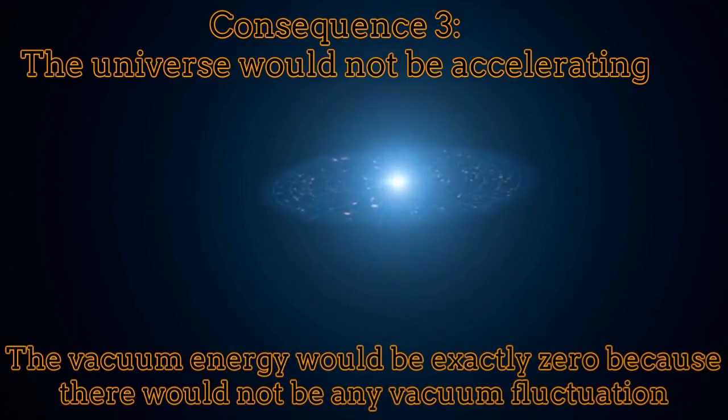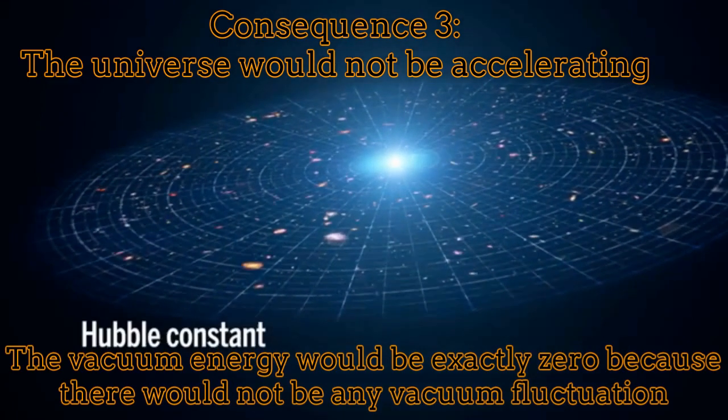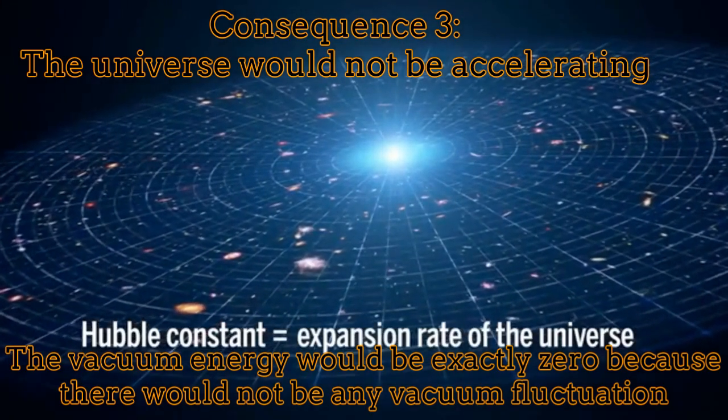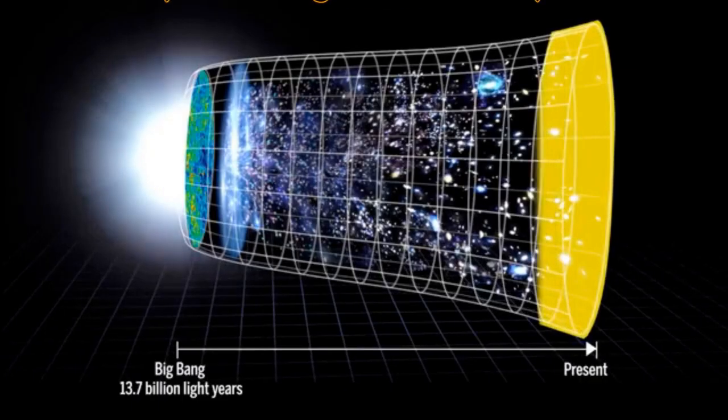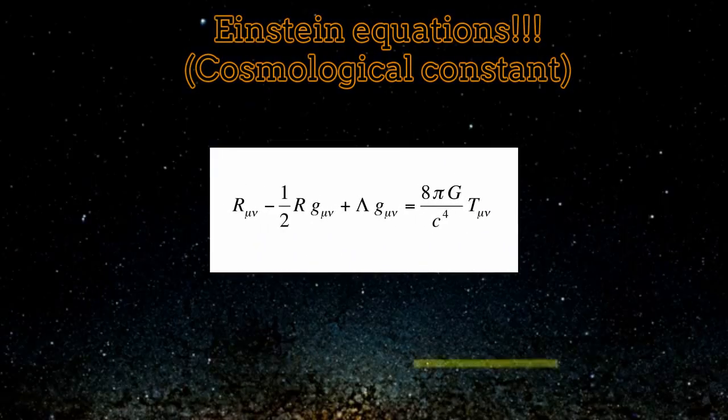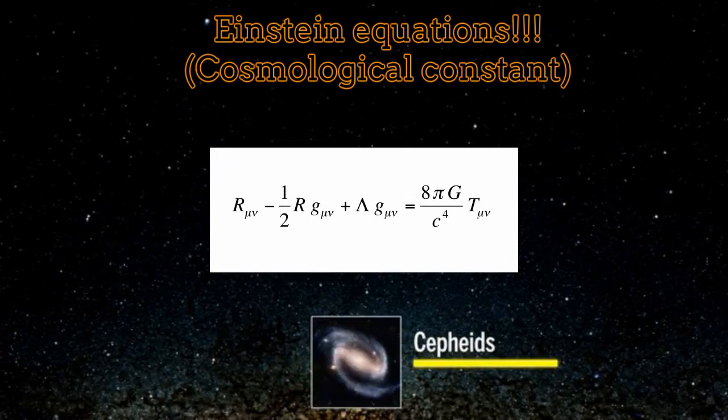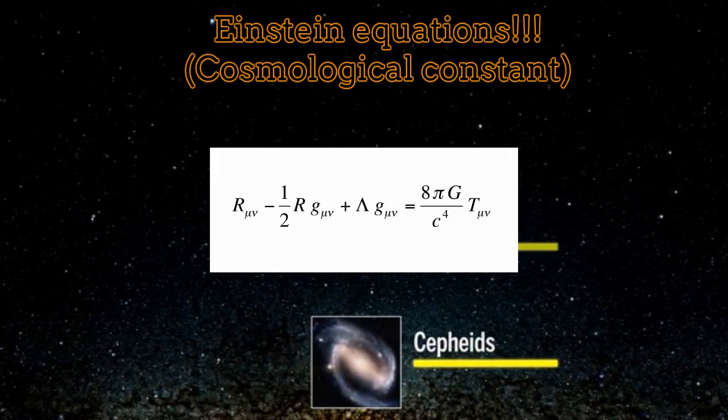Finally, the third consequence of violating the uncertainty principle in quantum mechanics would be that the universe, as we know it, wouldn't be in an accelerated stage, as it is currently happening. In fact, in order to reproduce the accelerated expansion of the universe, the Einstein equations contain a cosmological constant term. It is widely believed that this term corresponds to the vacuum energy.